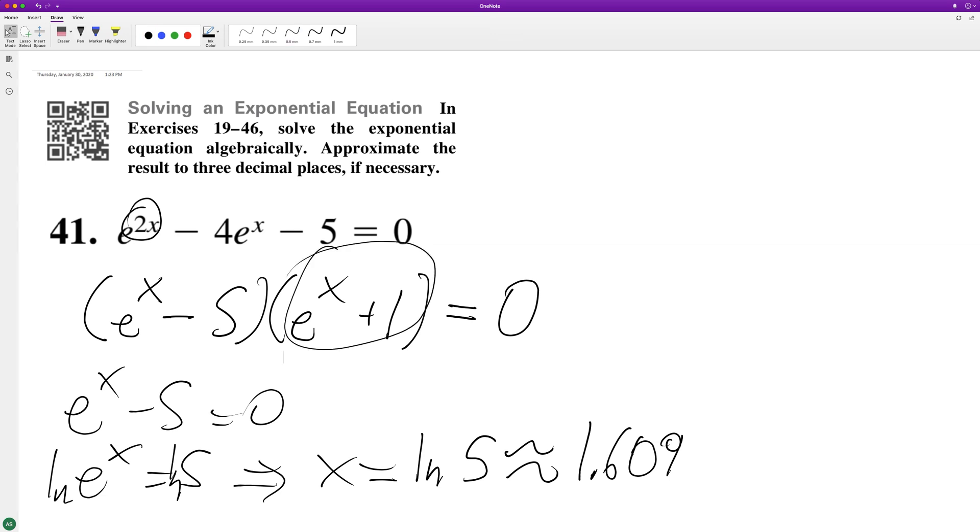There's no solution for this because you can't make e raised to some power a negative number. You can just make it really small and approach zero. So this is our final solution. I hope this helped you out. Appreciate you watching. Have a great day.